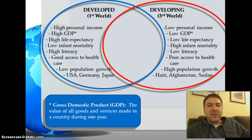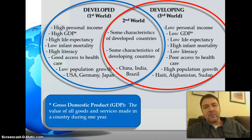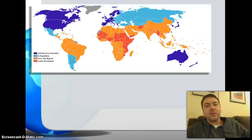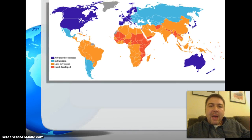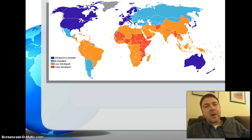Putting these together in a Venn diagram, you can see how the opposite is true on each side. There is a middle ground of second world countries — like China, India, and Brazil — that have some characteristics of developed countries and some of developing countries. On this map, the blue countries are the developed countries, the more blue the more developed, and the orange and red countries are developing, the more red the less developed.